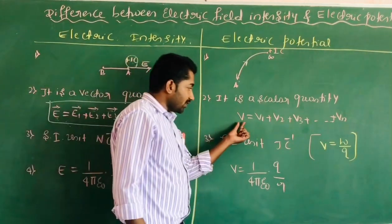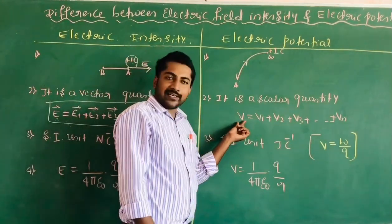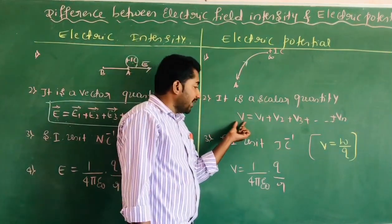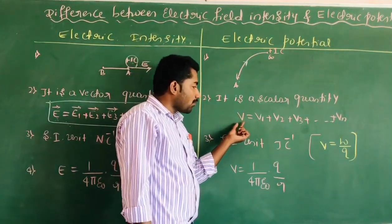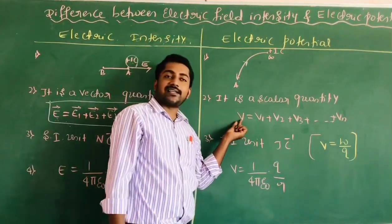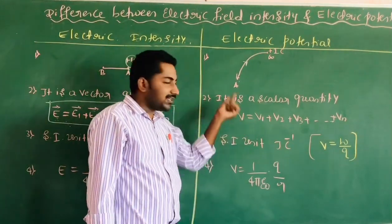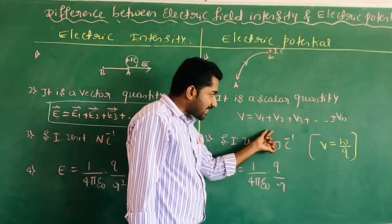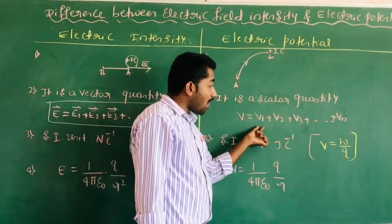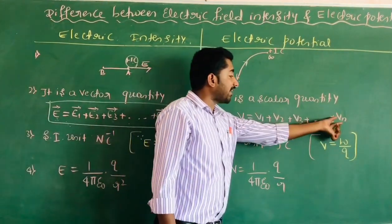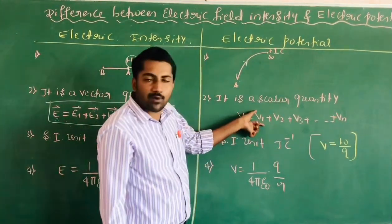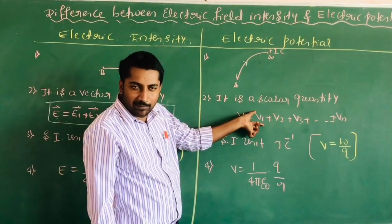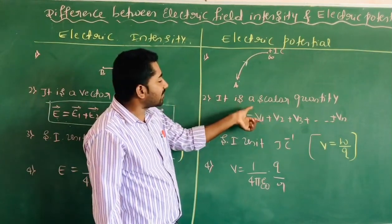Here V is the electric potential. Electric potential due to the point charge at that point is equal to the algebraic sum of all the electric potentials at that point.